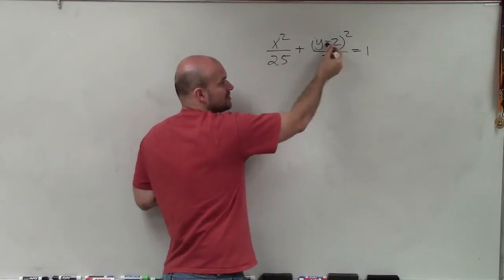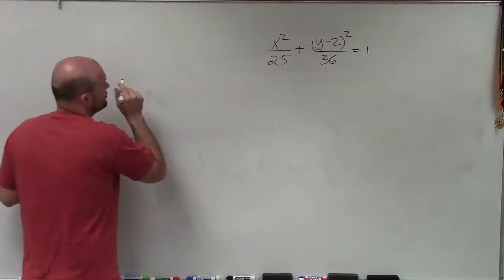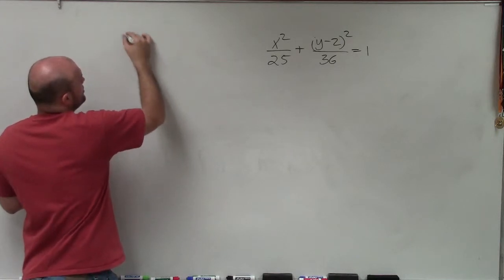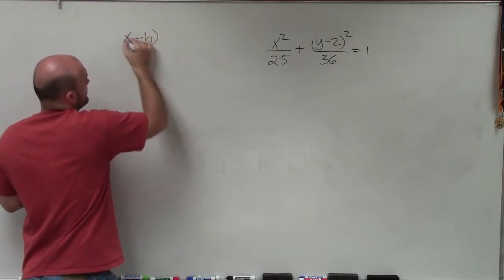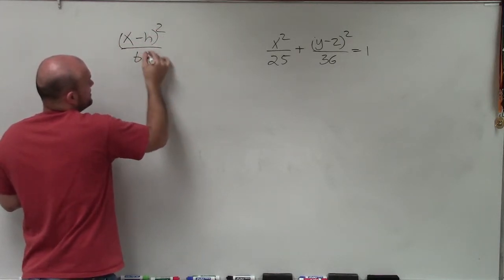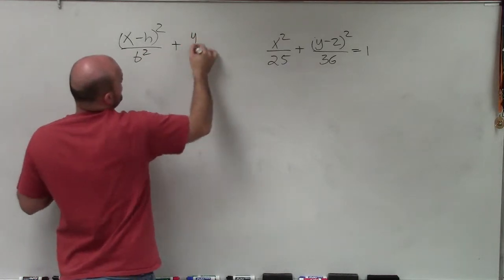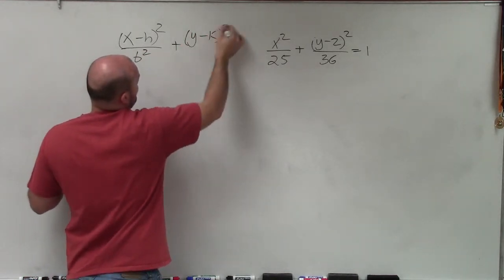But more importantly, the a squared is under the y minus k squared. So when I'm looking at my general form, the reason why I'm talking myself through this is I'm running my way through the general form, because there's two of them for an ellipse.